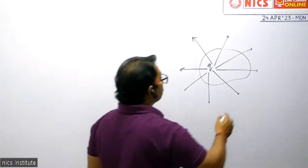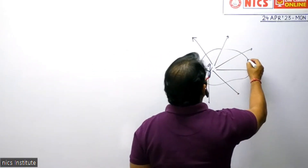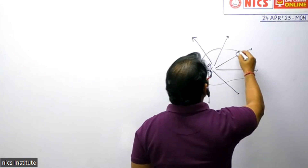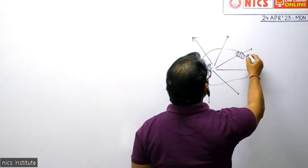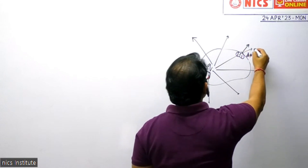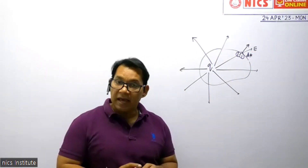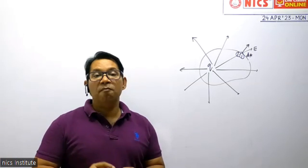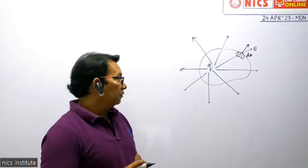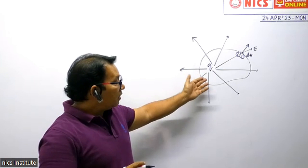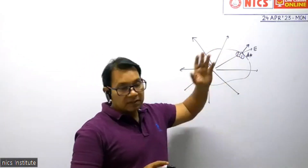If I take some small area DA, perpendicular to the surface, this electric field is here. On the Gaussian surface, the electric field will have a different direction and different magnitude at every point, because it's a point charge. So everywhere on the Gaussian surface, the direction and magnitude of the electric field is different.